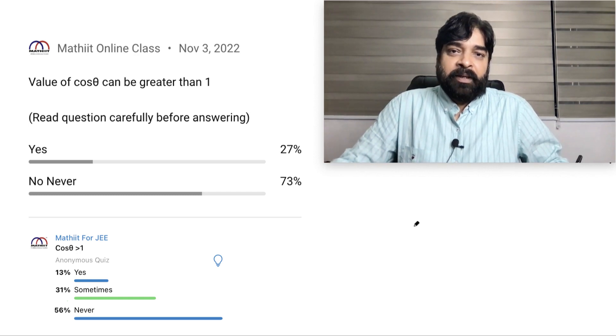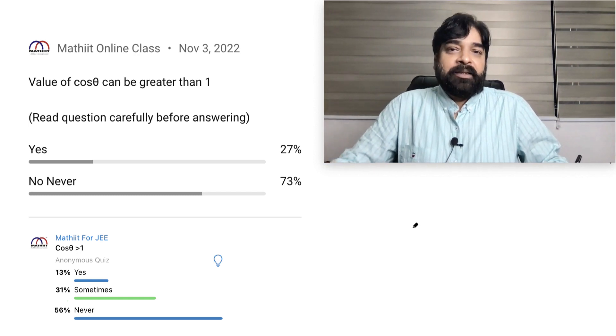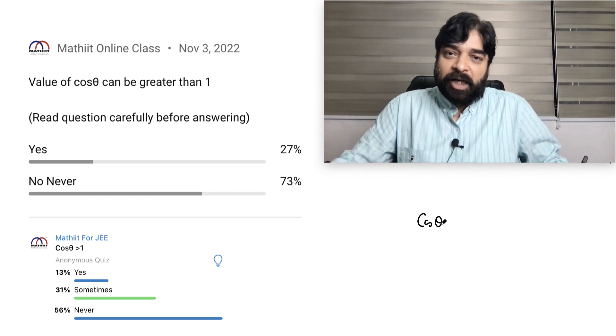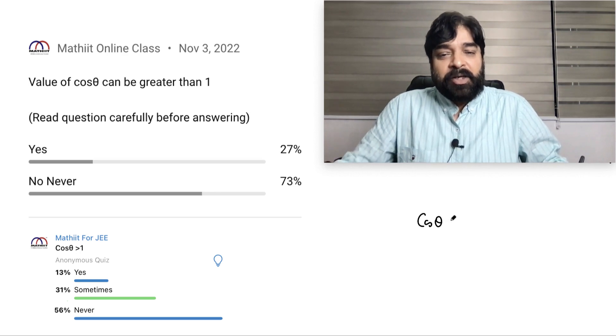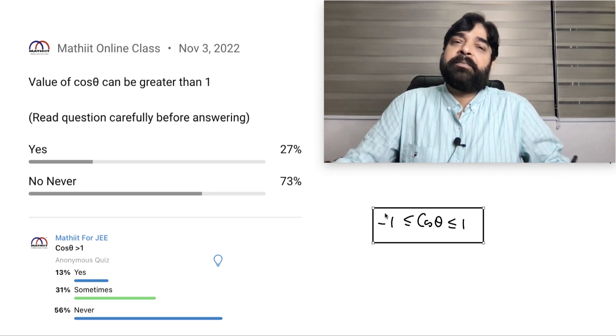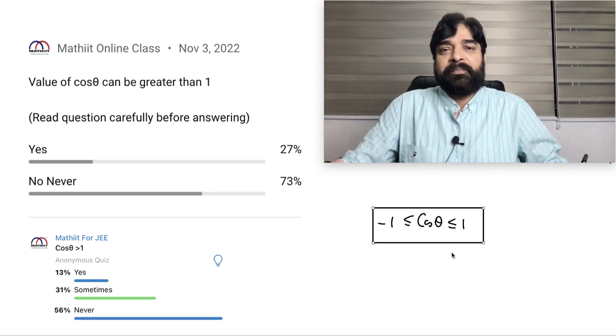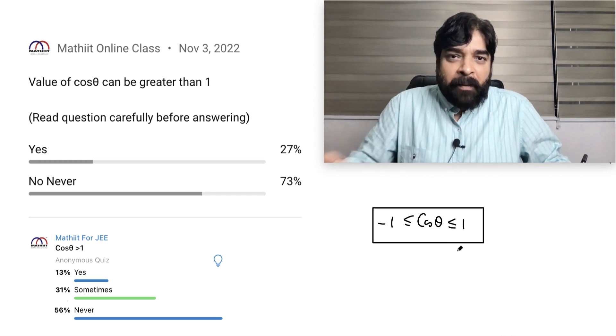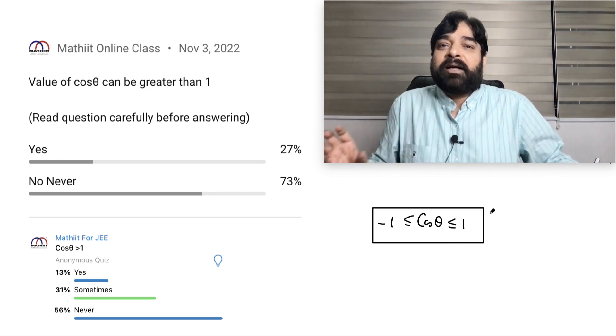But before that, where does the misconception get started? The misconception gets started because from childhood, from ninth class onwards, we used to study this inequality: cos θ always lies between minus one and one. Everybody has seen this inequality.